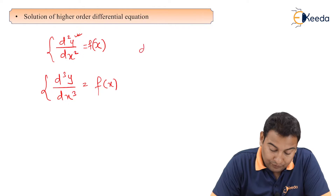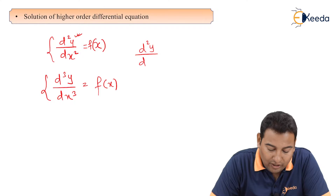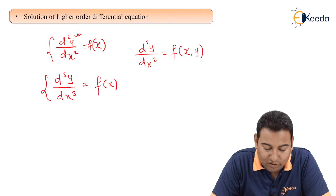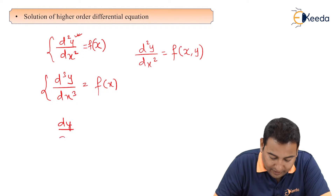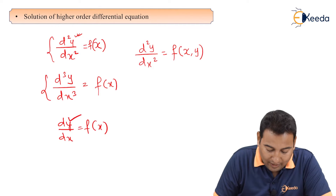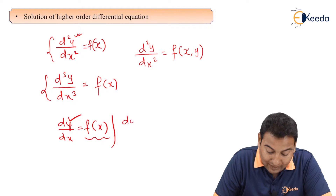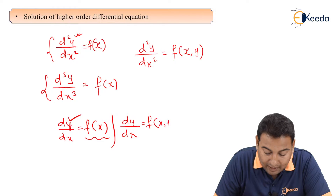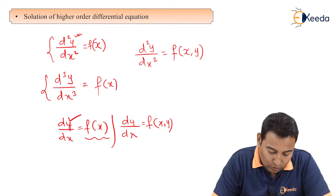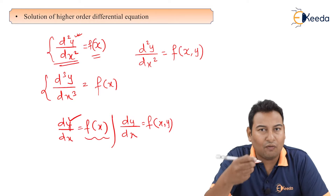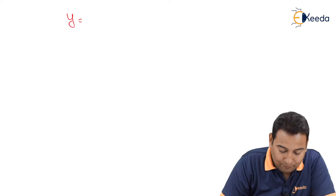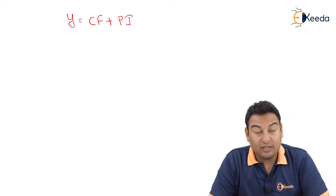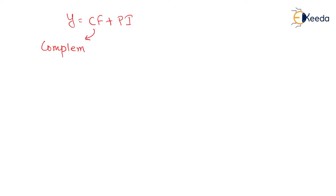But what if you get a higher order equation — say d squared or d cubed — and on the right hand side you get a function of x as well as y? To understand this, recall the first order case: if it is dy/dx with only a function in x, you integrate to get y. If the right hand side has both x and y, the method is variable separable. Similarly, for higher order equations with both x and y on the right hand side, we need to use the solution: y = CF + PI.